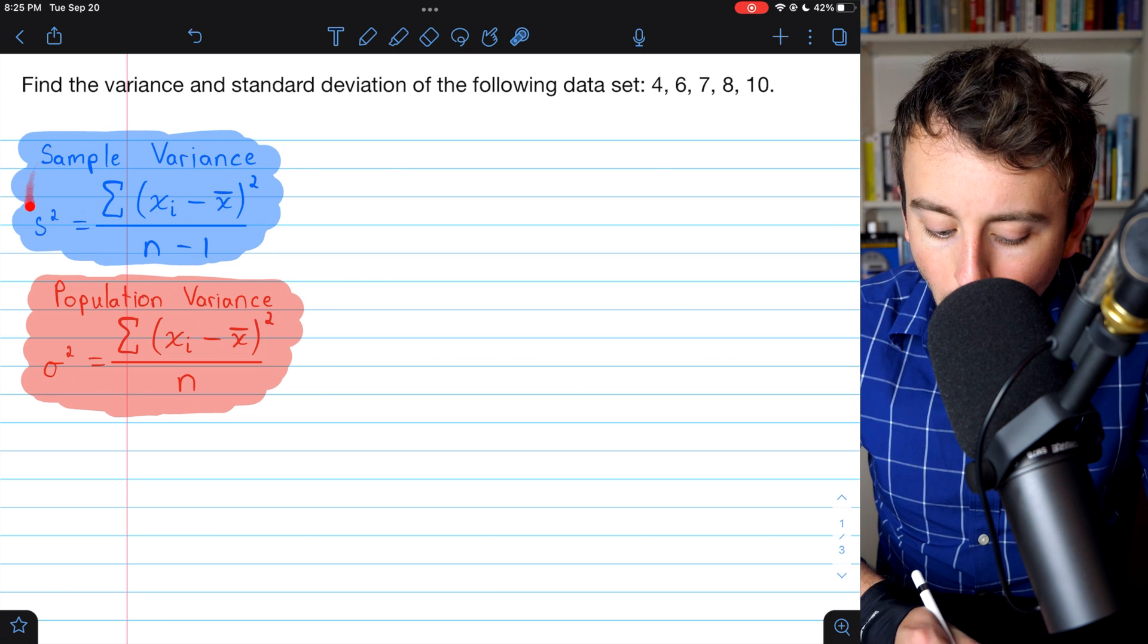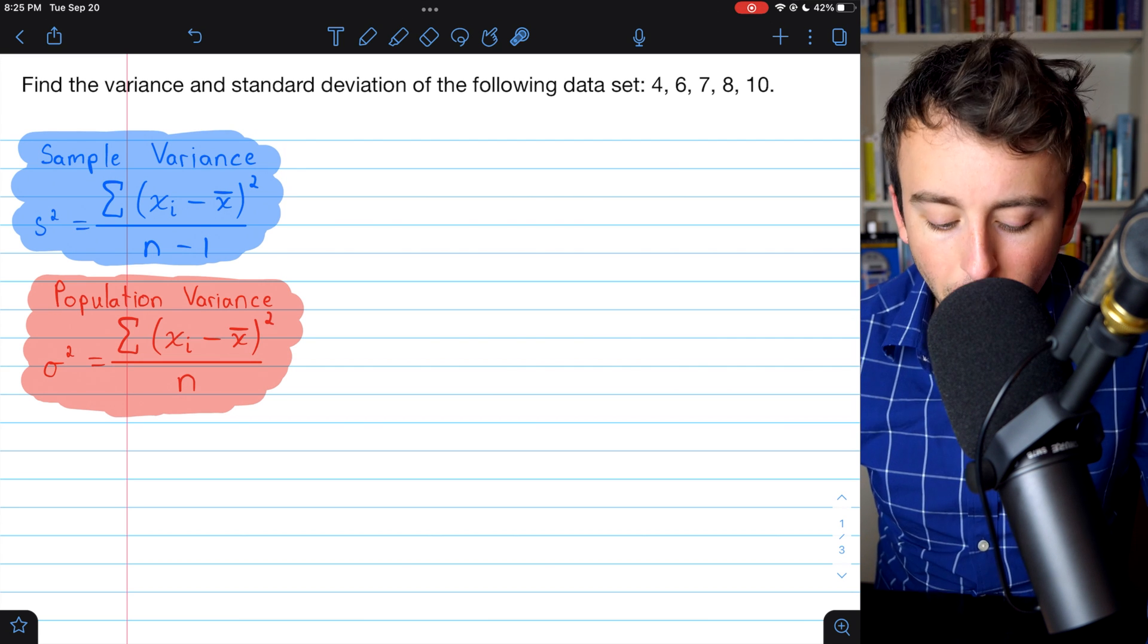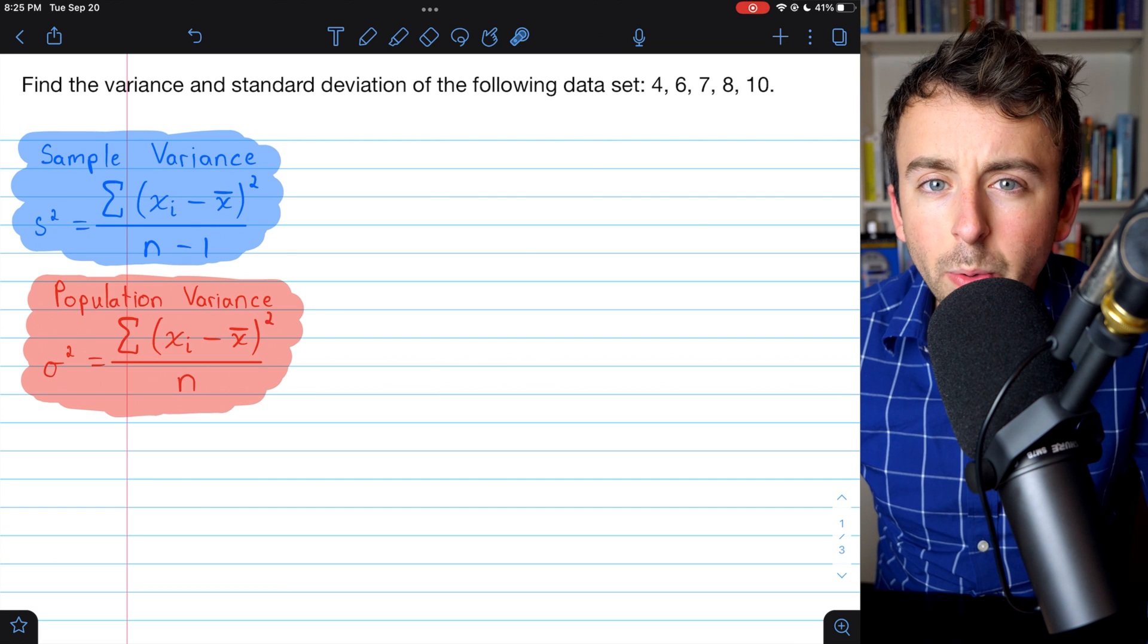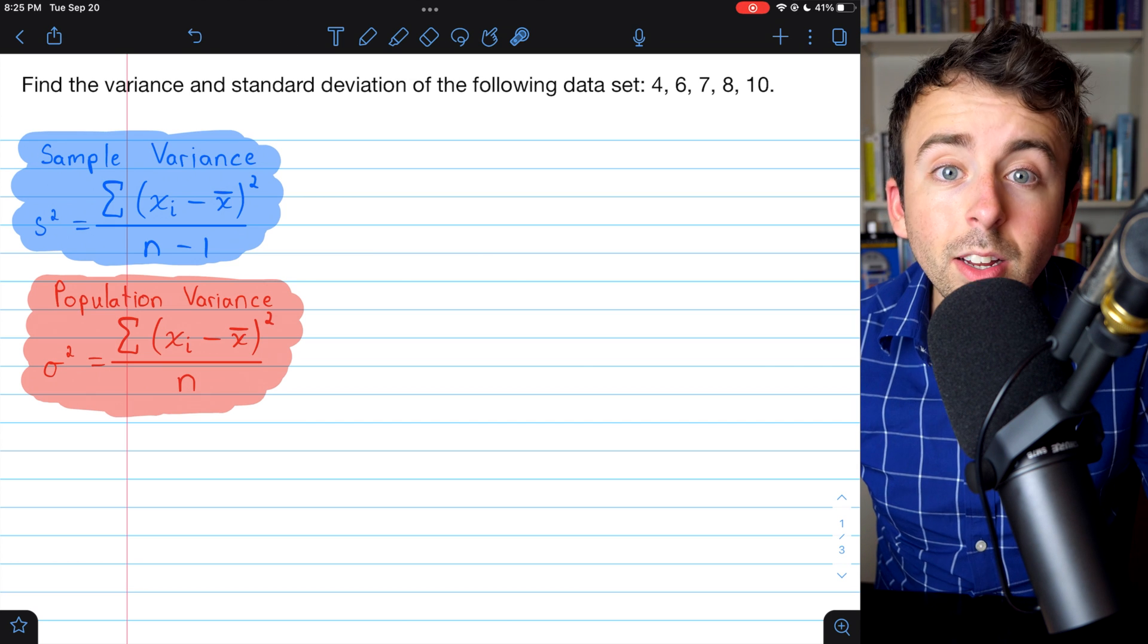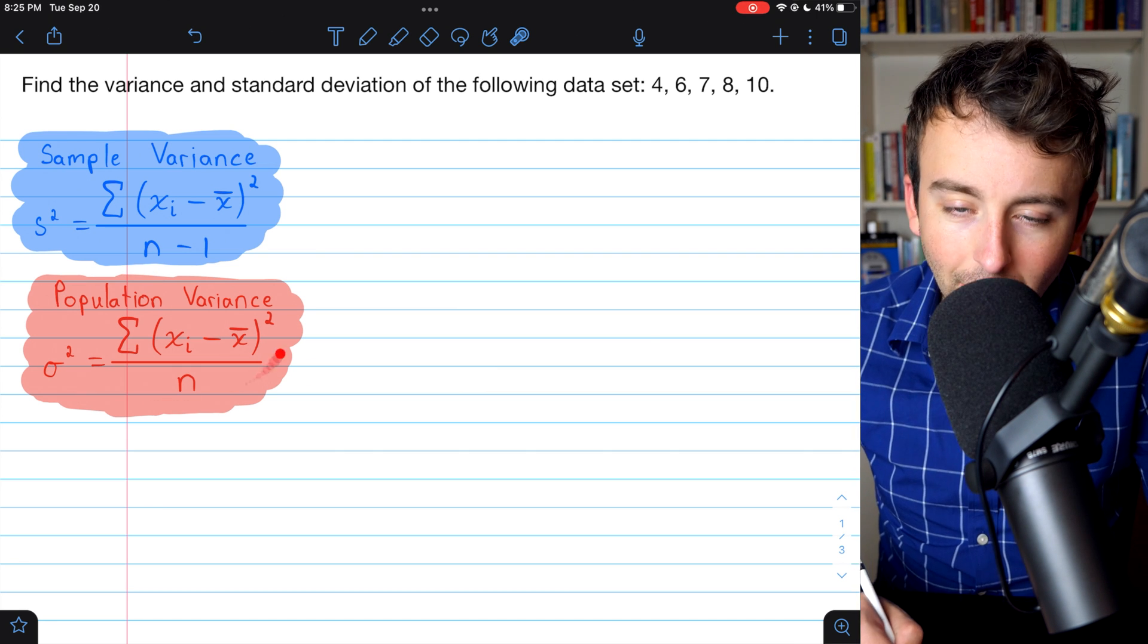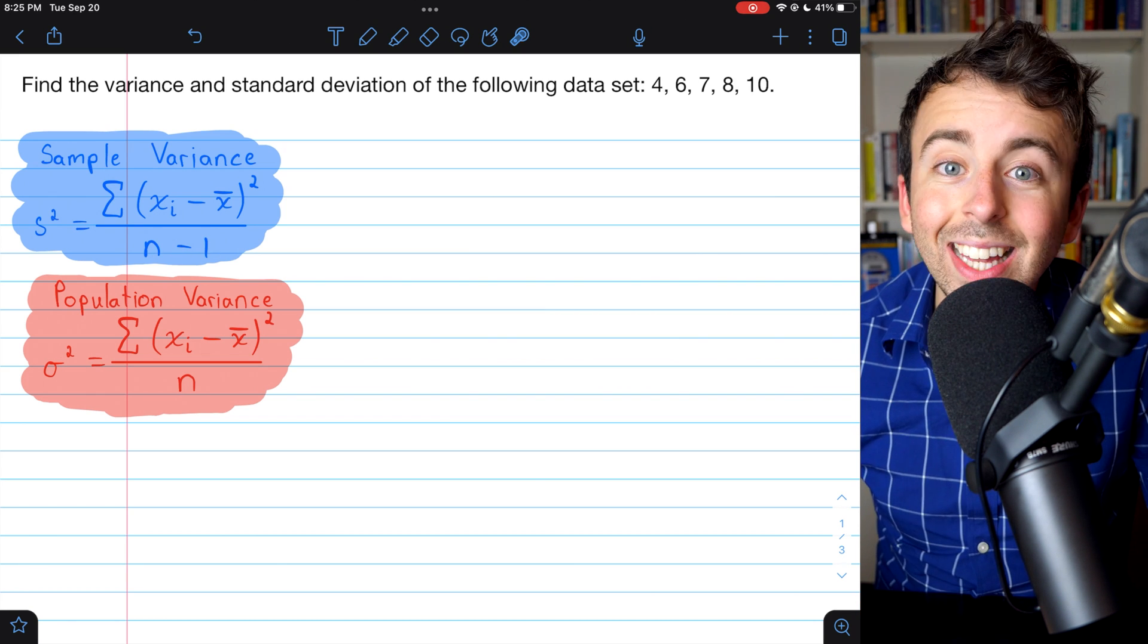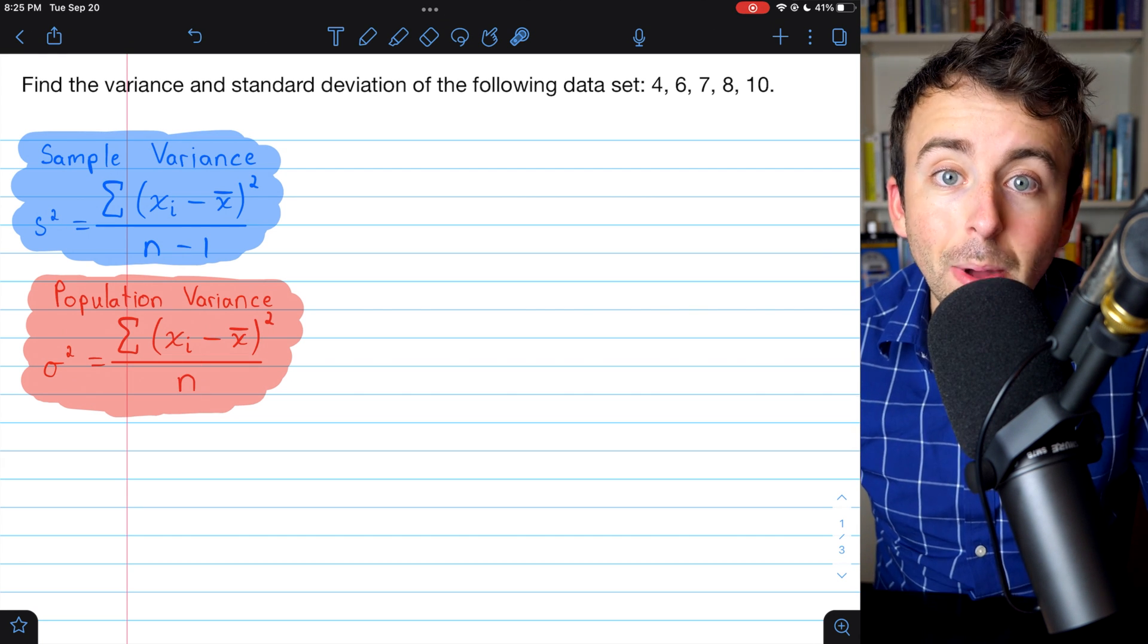Formulas for variance are over here on the left. There's two formulas, but the difference is only minor. This first one is for sample variance. That's for the variance of a sample of data, which is usually what you're going to use because typically you'll have data from a sample, not a whole population. But theoretically, if you did have data for a whole population, this is the formula you would use for the variance. The only difference is that one has a division by n minus one, so one less than the number of data points you have, whereas the other population variance just divides by n.